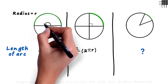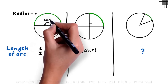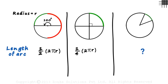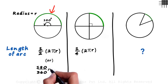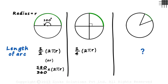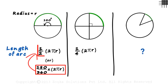The first arc subtends an angle of 180 degrees at the center. The entire circumference subtends an angle of 360 degrees at the center. So the length of the arc is given by 180/360 multiplied by 2πr. In simple words, the arc has covered 180 degrees of the total 360 degrees. This can be reduced to half multiplied by 2πr.